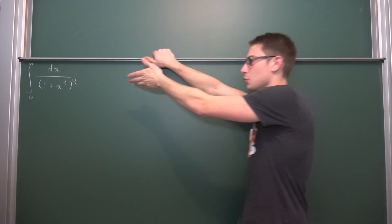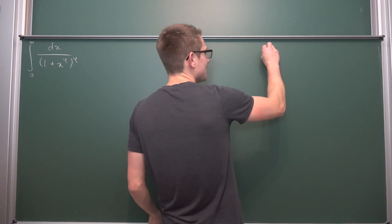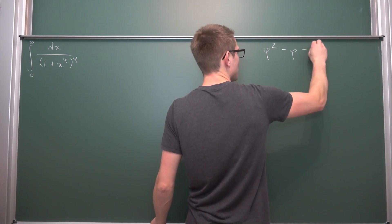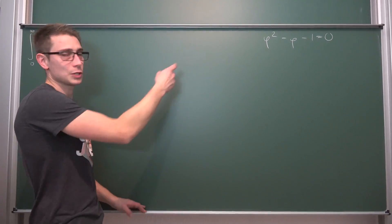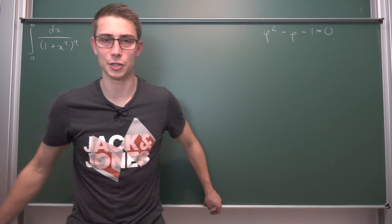This right here is the golden ratio, phi. I want you guys to remember the golden ratio is the very thing, the very number that satisfies the following polynomial equation: phi squared minus phi minus 1 is equal to 0. If you plug phi into here, which is 1 plus the square root of 5 over 2, you are going to get the solution to this equation.